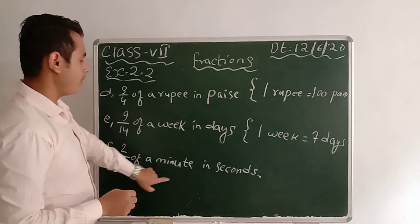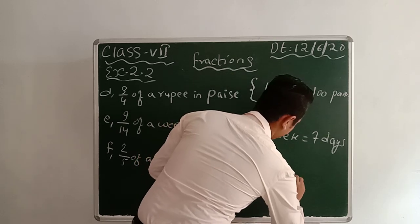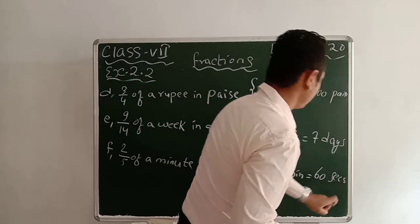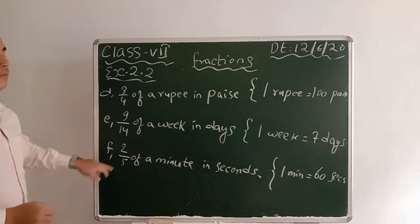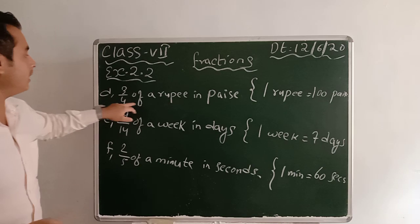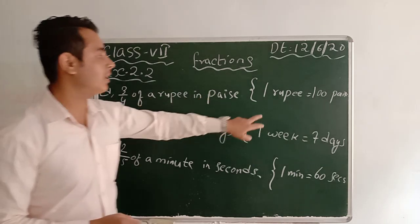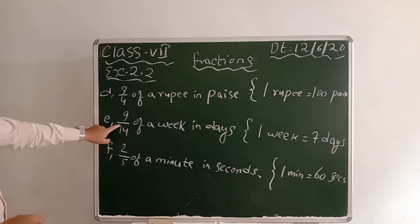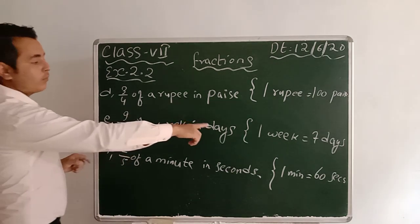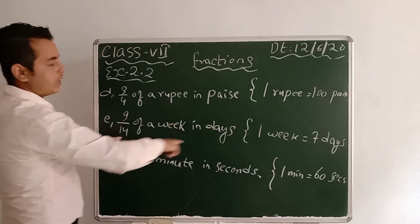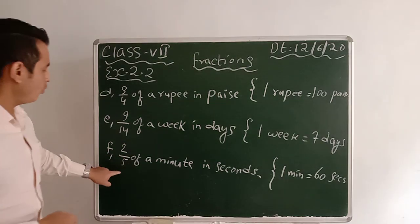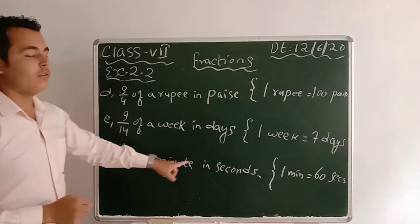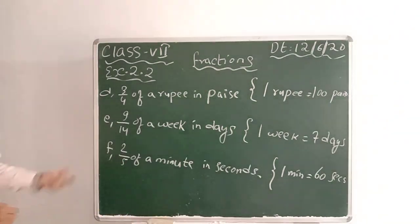Similarly for F: 2/5 of a minute in seconds means 1 minute equals 60 seconds. So 3/4 of a rupee — multiply 3/4 by 100, your result will be in paise. For E: 9/14 of a week means 9/14 into 7. Similarly for F: 2/5 of a minute means 2/5 into 60. Do D, E, and F as your homework.